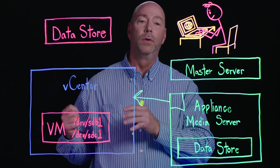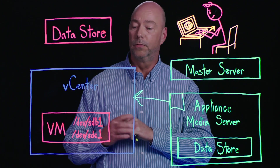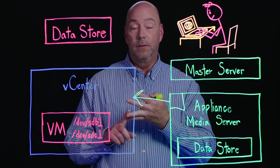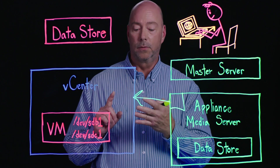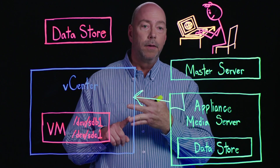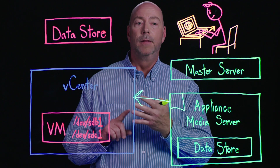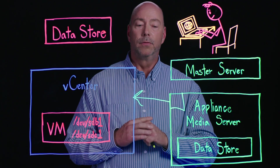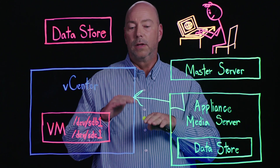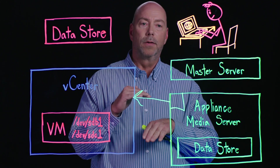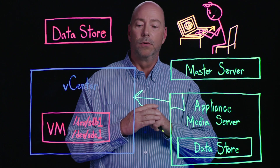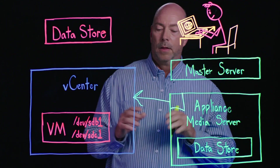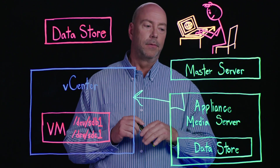We go inside vCenter and interrogate all the different resources that we would use in doing a backup. That includes vCenter connections, data stores, where the guests reside, the hosts, and the clusters — we understand what all those are. We give you tunables so that you can balance that workload between all those different resources so you don't overrun the resources on your system. That's the first thing we do with our intelligent policies.